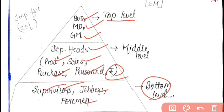In the bottom level management there are supervisors, who supervise workers to check if they are working properly. There are also jobbers — people who bring workers to the company. Since the company is not in direct contact with each and every person, jobbers work like a human version of a job portal such as Naukri.com, finding and bringing workers to the company. And finally, the foremen and workers who actually do the work.